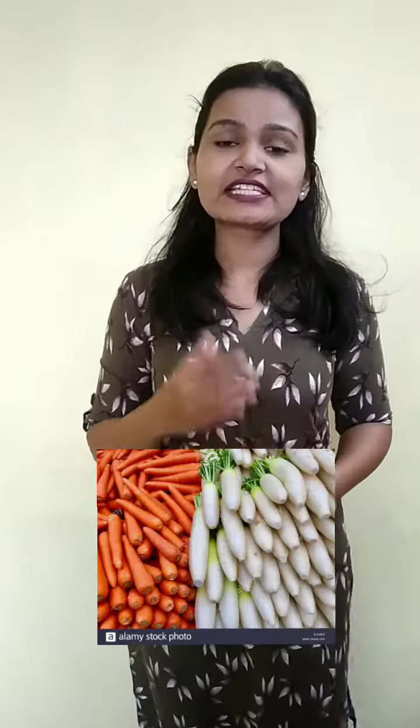From flowers we get broccoli and cauliflower. From leaves we get spinach and lettuce. From fruit we get banana and pineapple. From stem we get potato and sugar cane. From roots we get carrot and radish. So different parts of the plants give us different types of food.